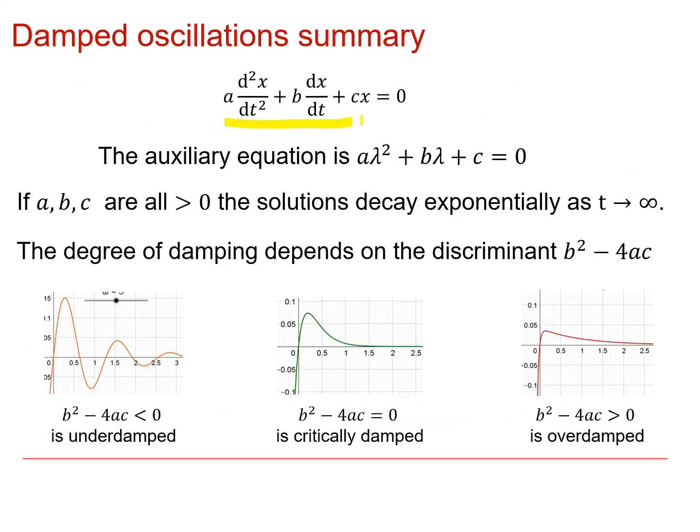So in summary then, if we've got this differential equation, we'll get this auxiliary equation. If you think about the solutions of that auxiliary equation, we're going to get that lambda is equal to minus b plus or minus the square root of b squared minus 4ac all over 2a. Now, if a, b and c are all positive, you can see I'm always going to get a minus b over 2a bit to this and then plus or minus whatever the discriminant comes out to be. So I'm always going to get some kind of e to the minus some constant t. So I'm always going to get damping decay as t tends to infinity.